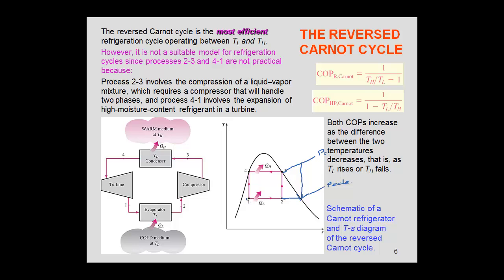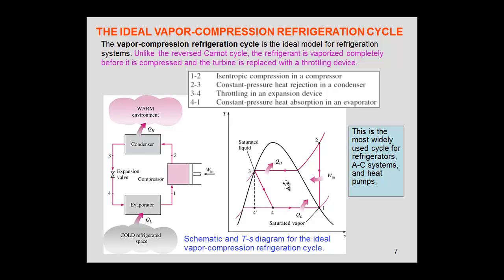We recognize that we cannot use a turbine here, so what we're going to use is an expansion valve. That expansion valve will create some entropy. So we're going to change this a little bit — states one, two, three, four — and we said that this would be our ideal vapor compression cycle.